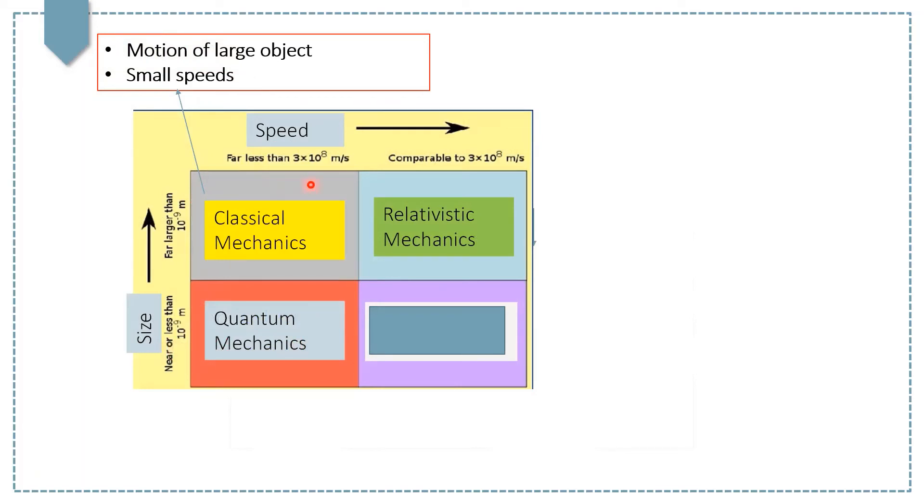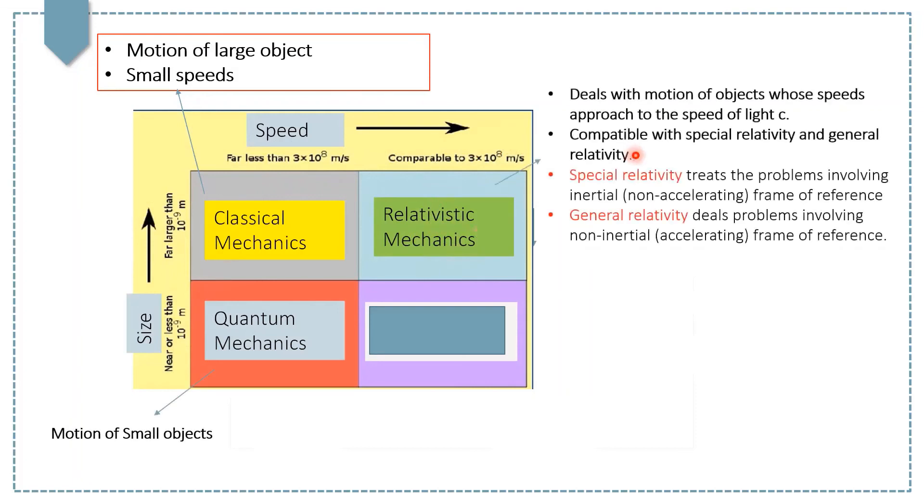And if the speed of the object approaches the speed of light, that is 3 times 10 to the power 8 meters per second, relativistic mechanics comes up with the solutions. Relativistic mechanics is compatible with special relativity and general relativity. Special relativity treats problems involving inertial frames of reference, and general relativity deals with problems involving non-inertial frames of reference.